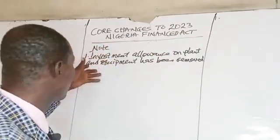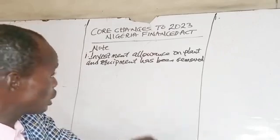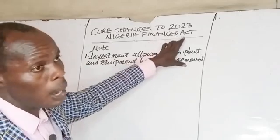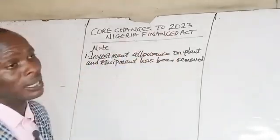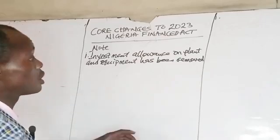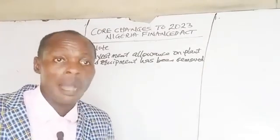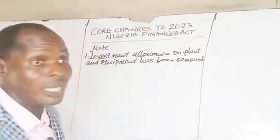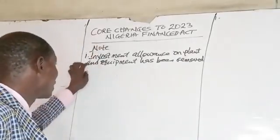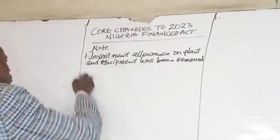But if the year given in the question involves 2023, 2024, or 2025 year of assessment, you will not need to apply investment allowance. The calculation of capital allowance still remains the same; only that you will not include investment allowance if the year of assessment is from 2023 upwards. Take note of that.